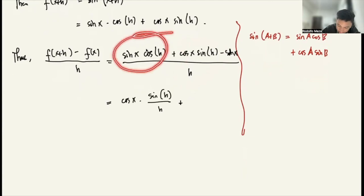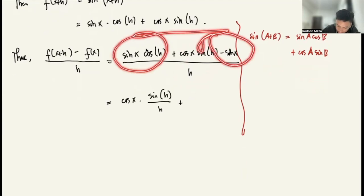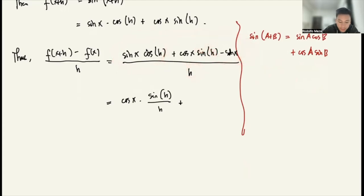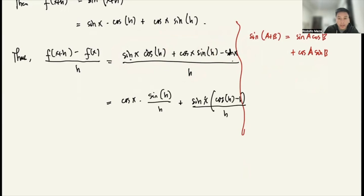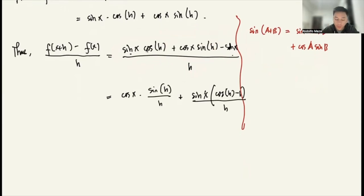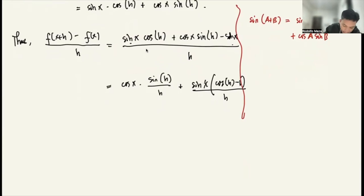...plus sine x times cosine h minus 1 over h. So I can take the limit of both sides of the equation. The limit of f(x+h) minus f(x) over h as h approaches 0...